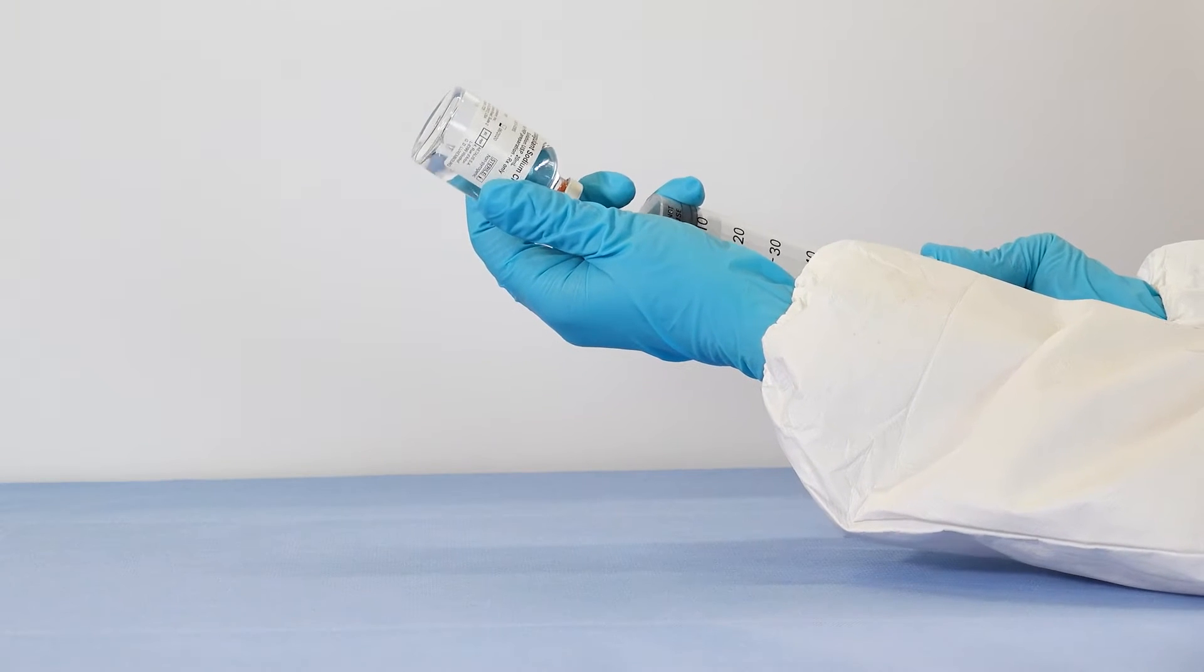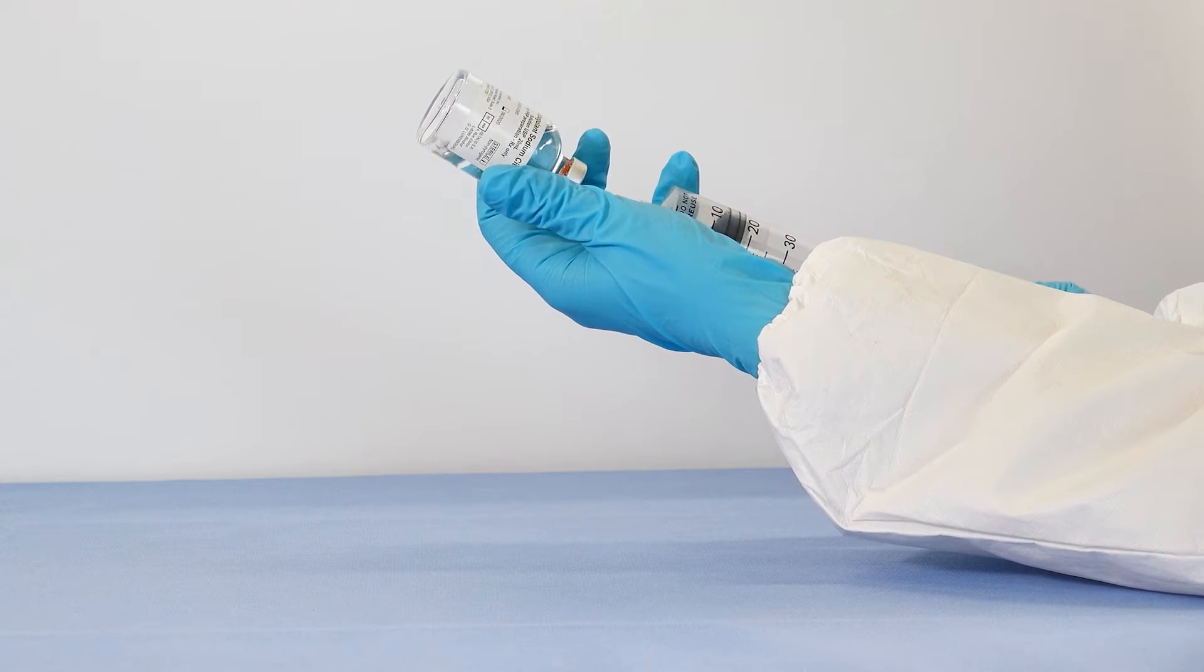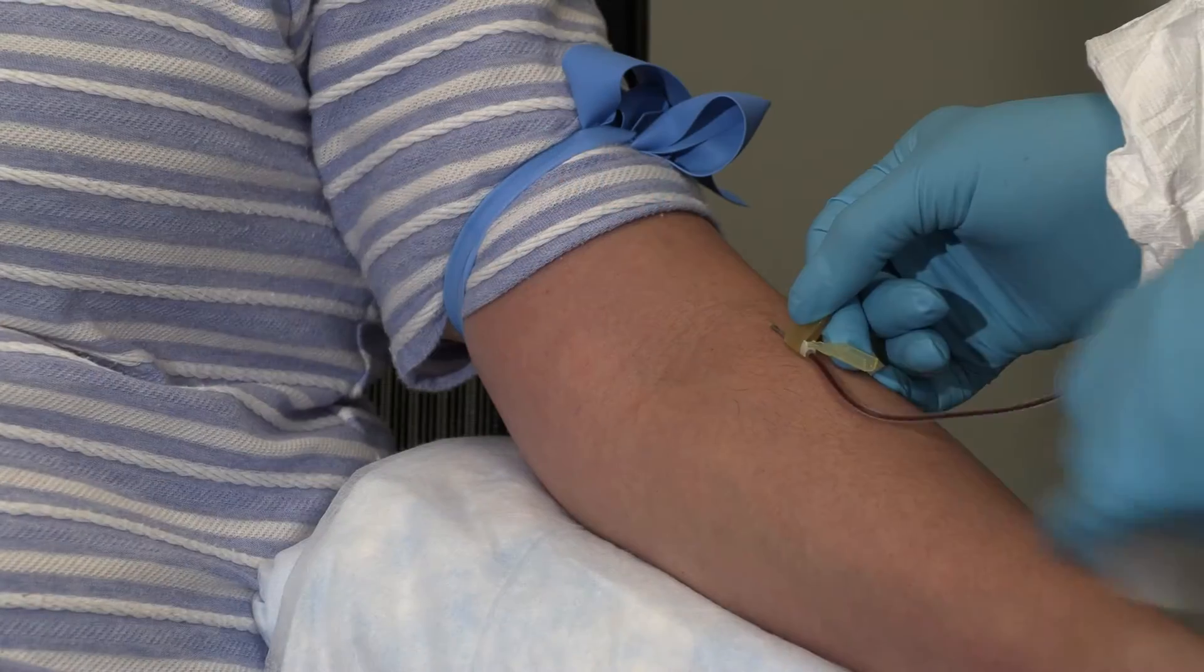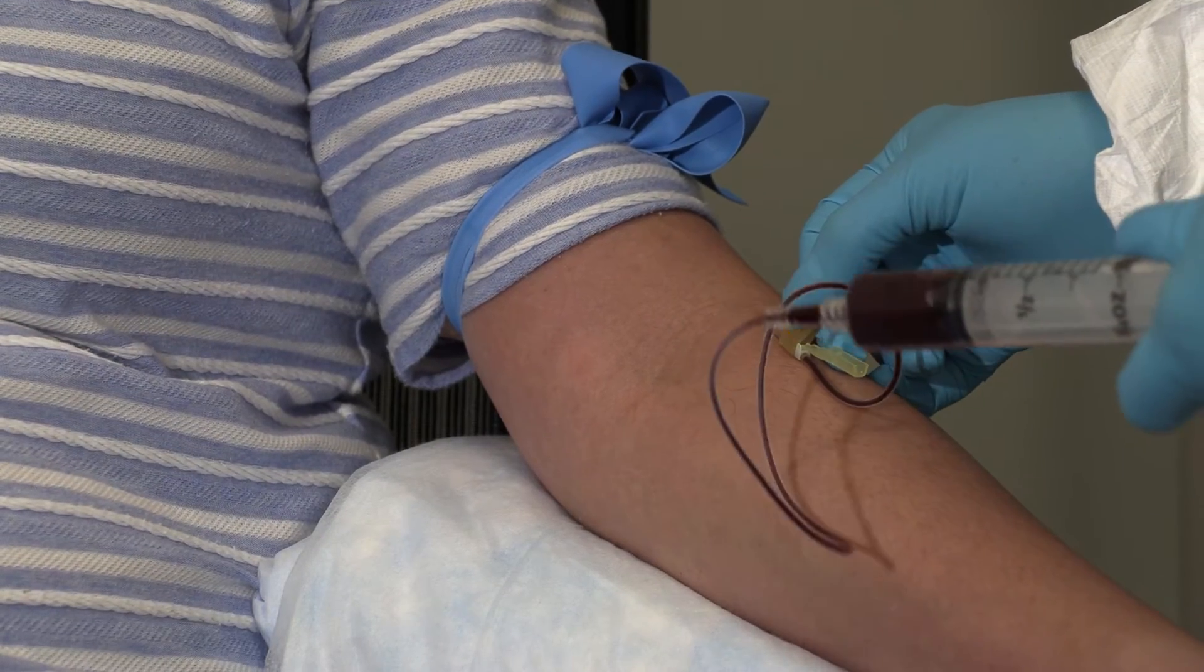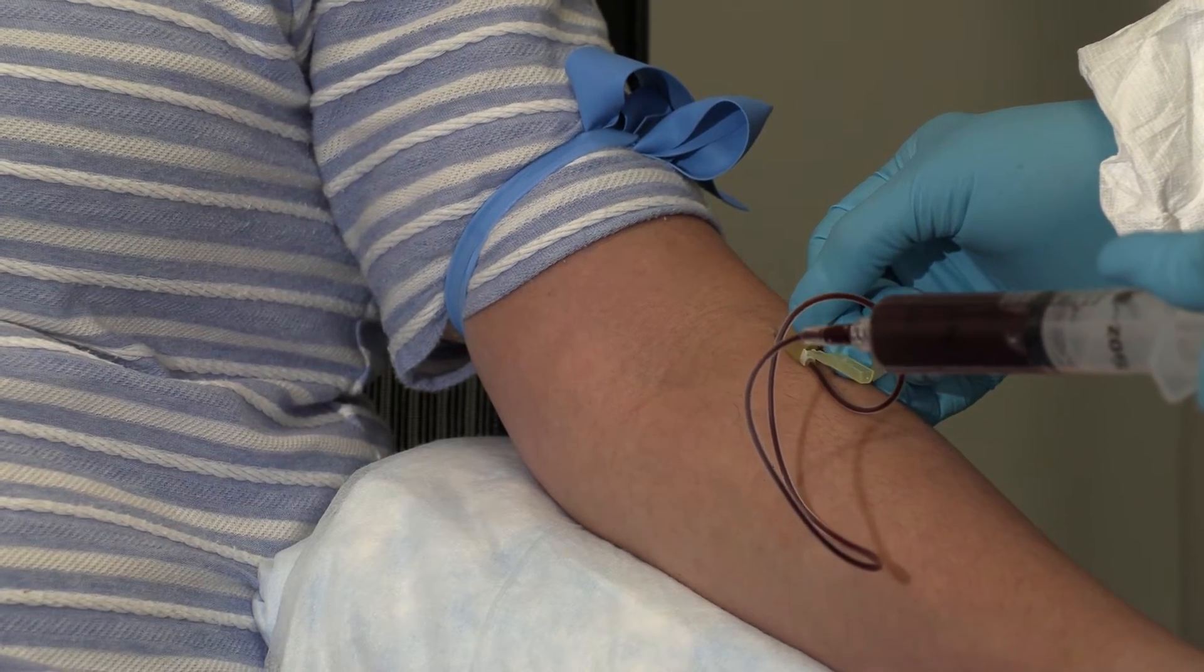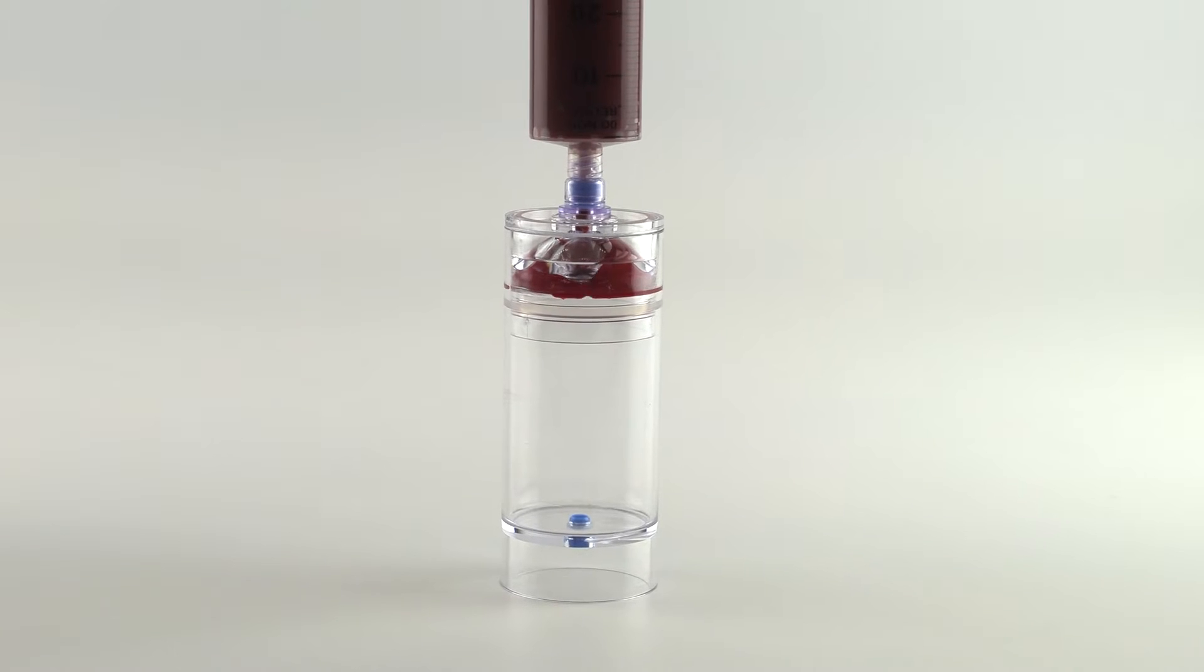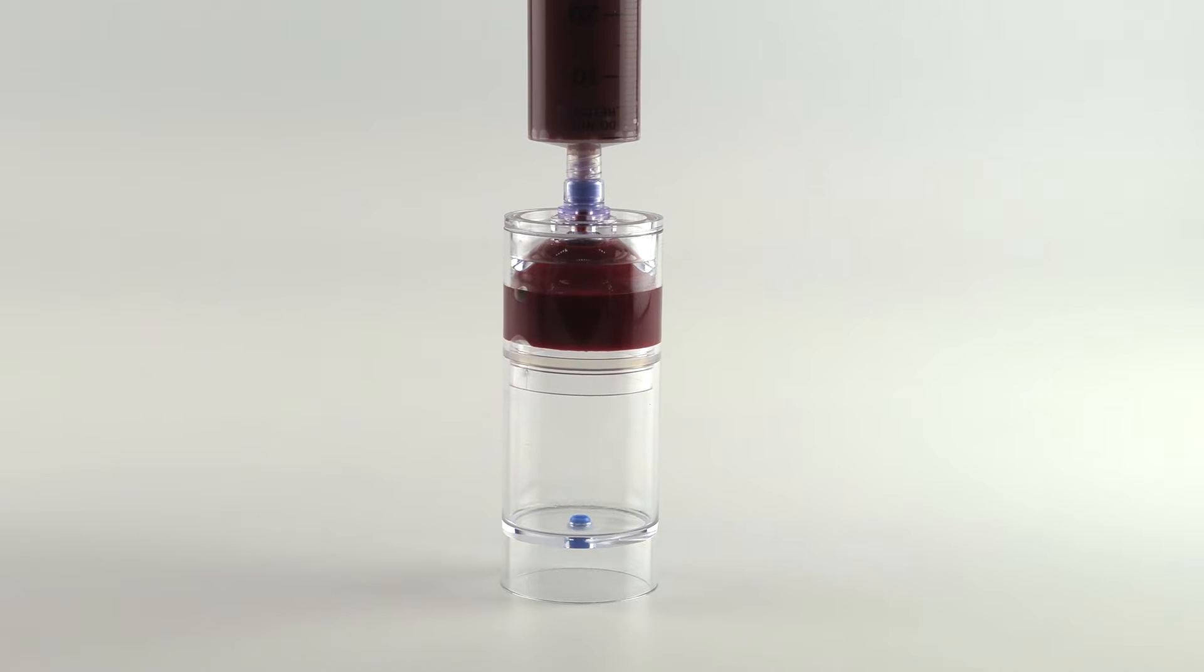Fill a 60-milliliter sterile syringe with 6 milliliters of citrate anticoagulant. Then draw 54 milliliters of blood from the patient, filling the syringe to 60 milliliters. Attach the 60-milliliter blood syringe to the needleless port of the separator device and slowly inject the anticoagulated blood.